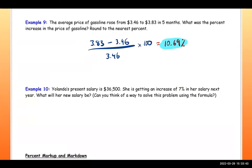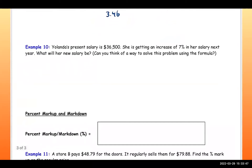Yolanda's present salary is $36,500. She is getting an increase of 7 percent next salary year — what will her new salary be? Multiply $36,500 by 0.07 (that's 7 percent), and you get $2,555 as the amount of increase.